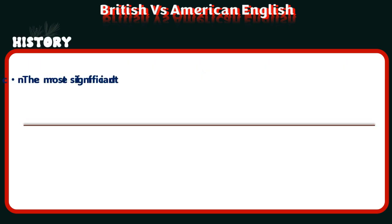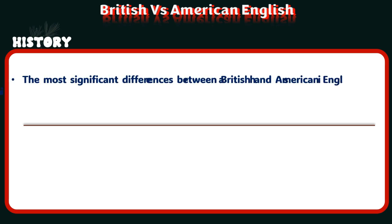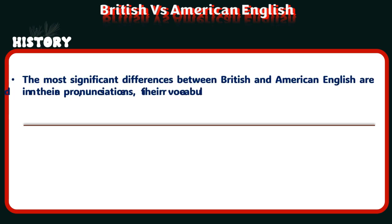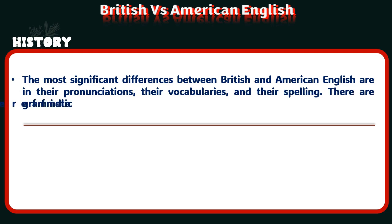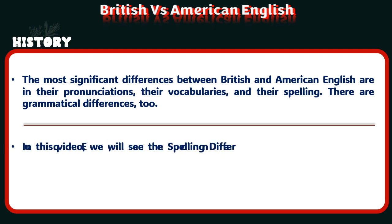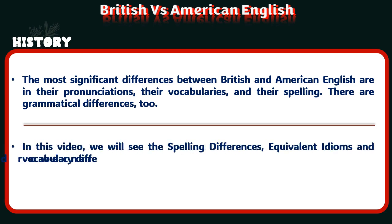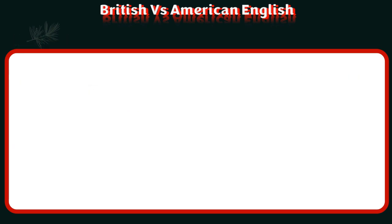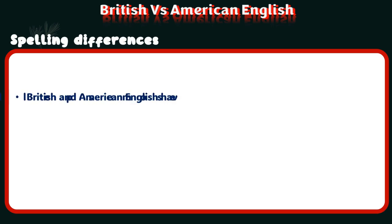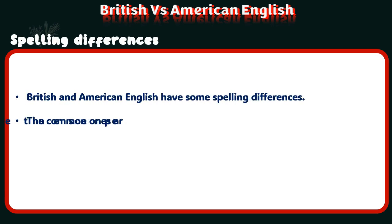The most significant differences between British and American English are in their pronunciations, their vocabularies, and their spelling. There are grammatical differences too. In this video, we will see spelling differences, equivalent idioms, and vocabulary difference words.